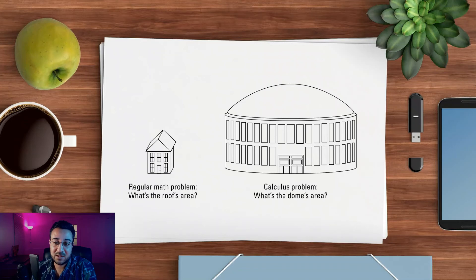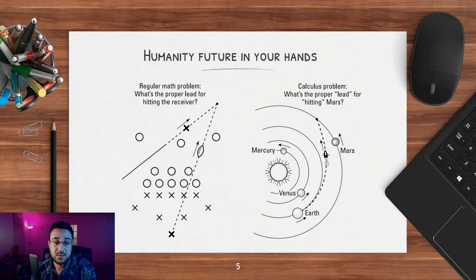Humanity's future is a problem. If you have somebody playing American football passing the ball from A to B, you can decide in order for B to catch the ball at position C using simple mathematics. But if you're thinking about the sun and Mercury rolling around the sun in an elliptical path, Venus and Earth, then you want to send a rocket from Earth to Mars.